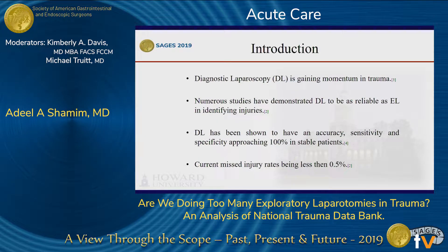Diagnostic laparoscopy, or DL, is gaining momentum in trauma. There have been numerous studies demonstrating DL to be as reliable as EL when it comes to identifying injuries. DL has been shown to have an accuracy, sensitivity, and specificity that approaches 100% in stable trauma patients. However, the biggest issue associated with DL has been missed injuries. By adopting mandatory exploration of all quadrants and multi-port DL, missed injury rates have dwindled down to about 0.5% in the current literature.